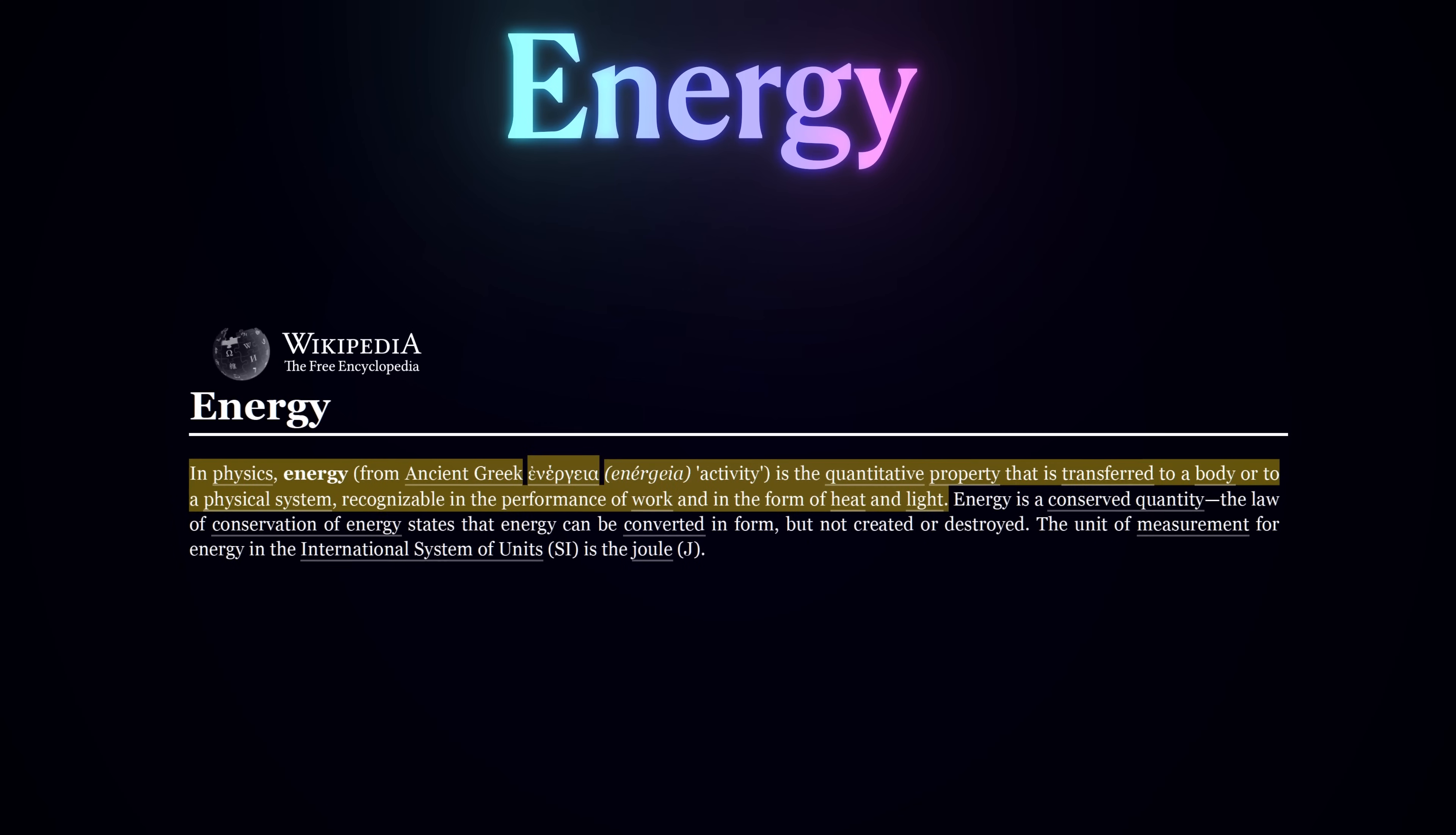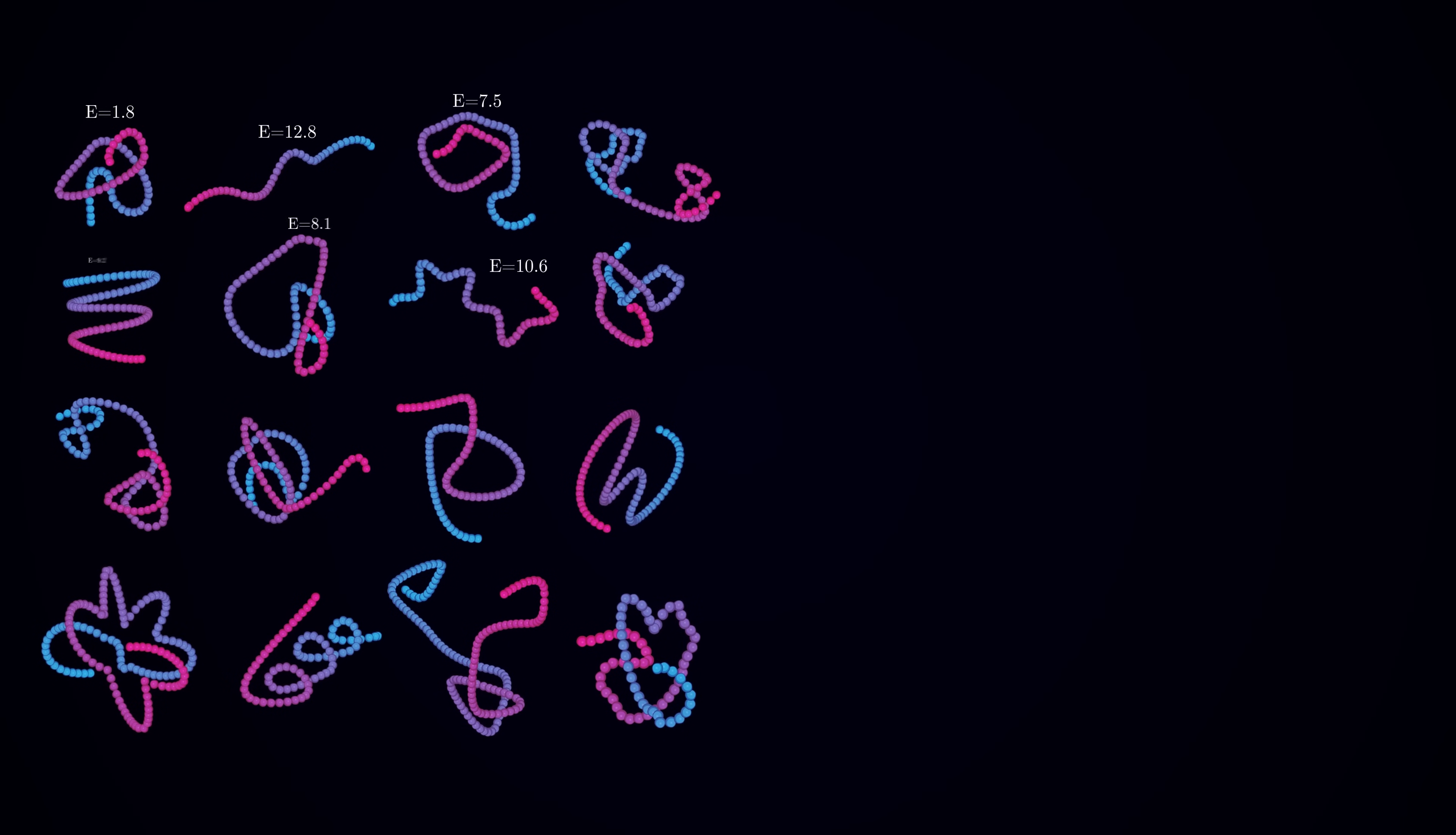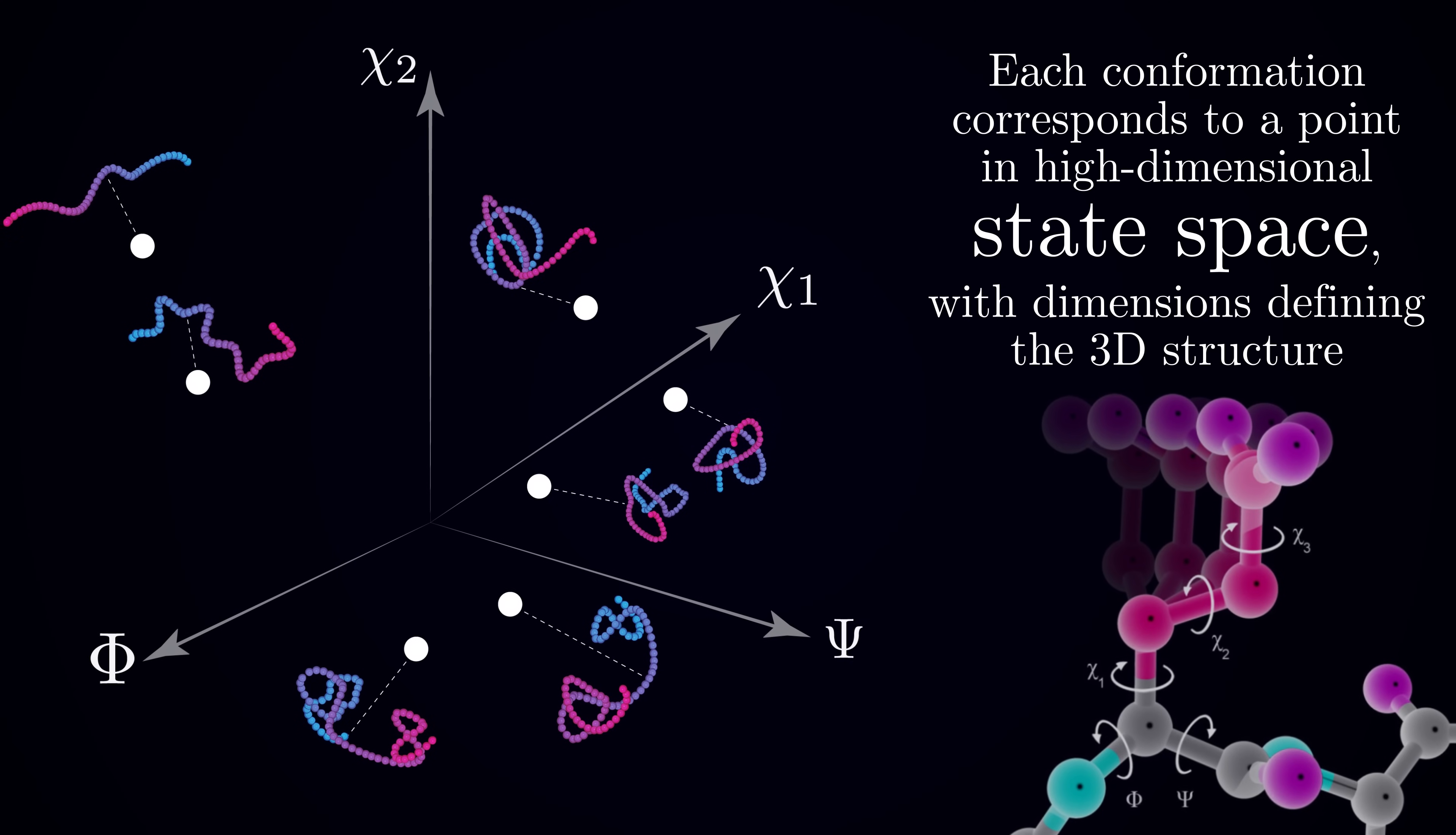If you think back to your high school physics days, you may recall something along the lines of energy is a quantitative property that describes the state of a system, namely the capacity to do work or cause change. Energy can be stored in a variety of different forms, and for the case of proteins, we will be interested in potential energy, stored in the interactions between the atoms in the protein chain. Each possible configuration of the protein chain has a specific potential energy level, determined by the sum of all these atomic interactions.